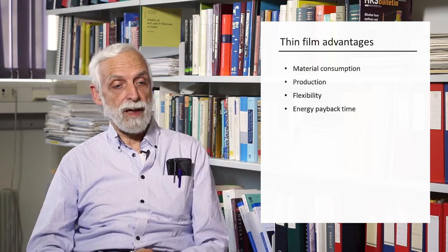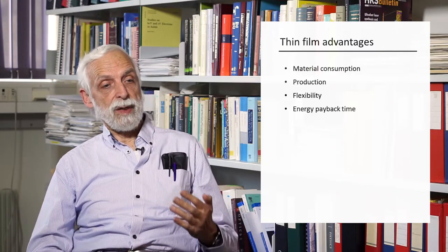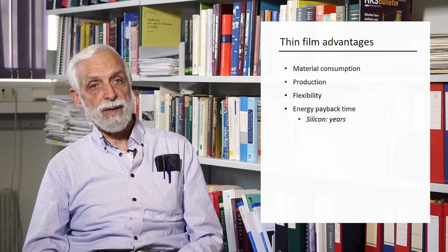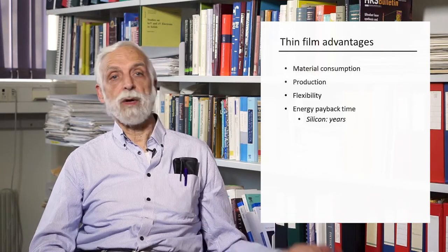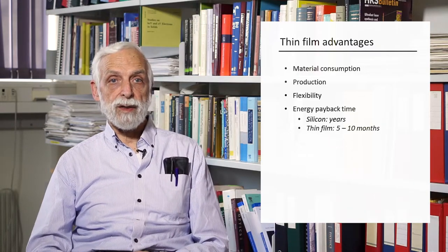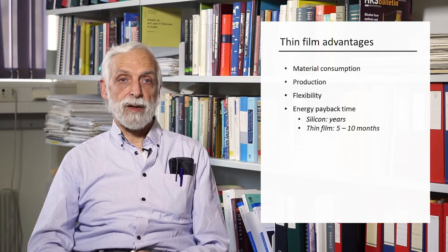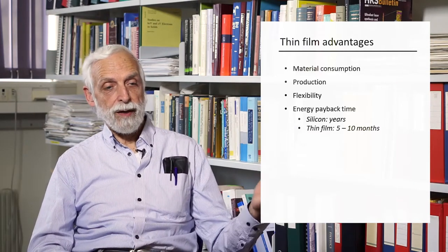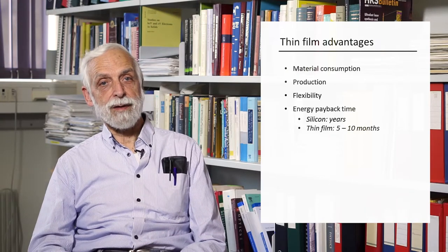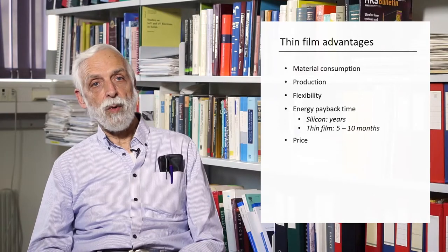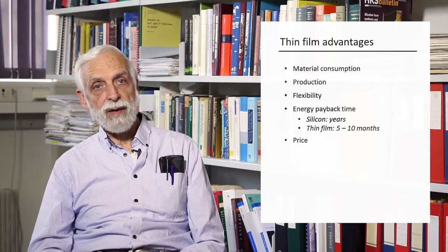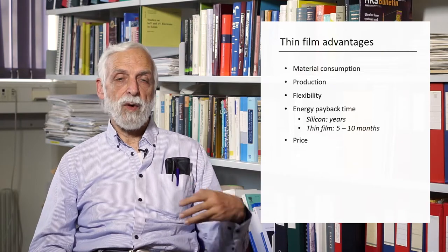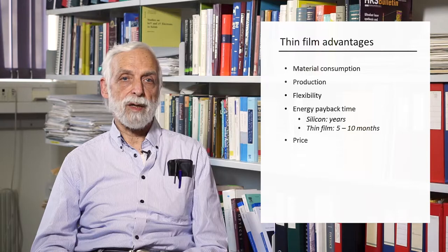For example, if you have a silicon cell, we are talking about an energy payback time — which means the energy to produce a cell and put it up — which is of the order of years. But for most thin-film cells, it's only on the order of some months, maybe 5 to 10 months. This is a big advantage, because if we are going to provide electricity to the earth, we need something where we don't spend all the energy just to produce the energy-harvesting materials. The price is now more or less equal to silicon, so you can have the same power for the same amount of money — one kilowatt produced by thin-films will be about the same as if produced by traditional silicon cells.